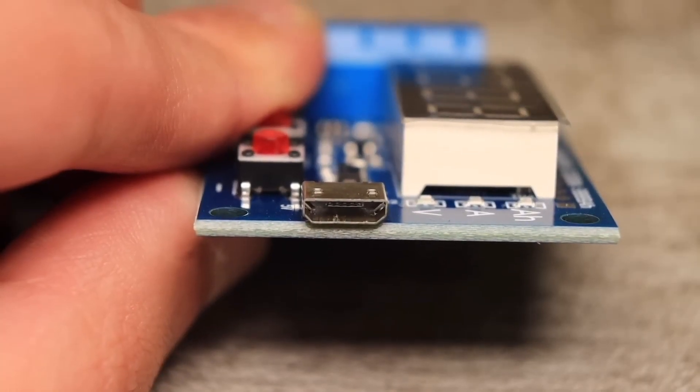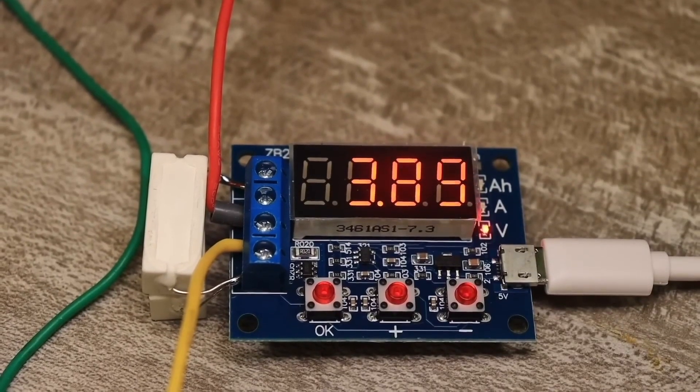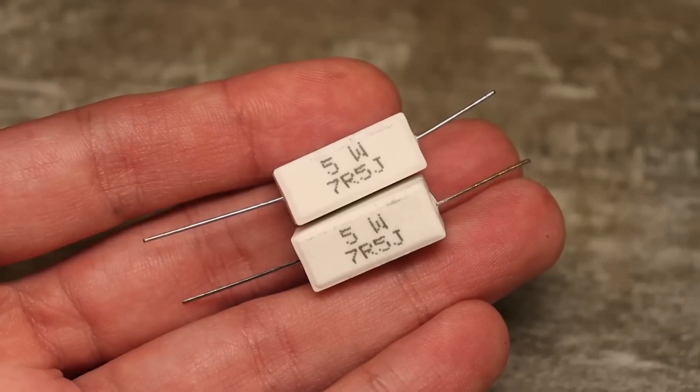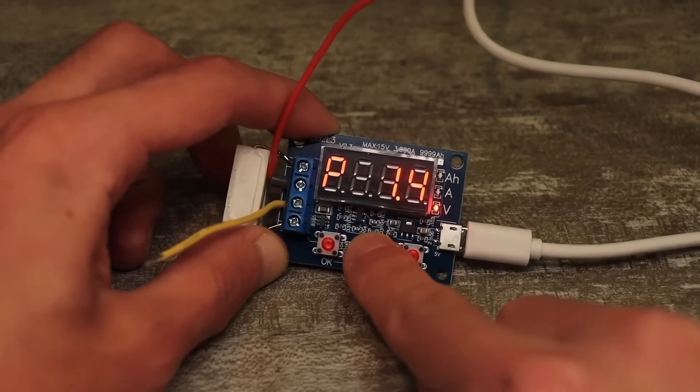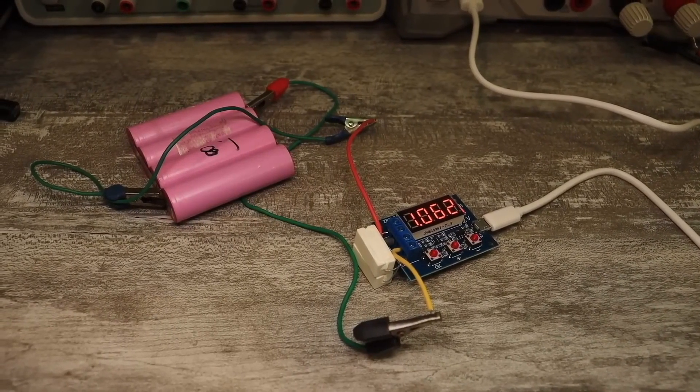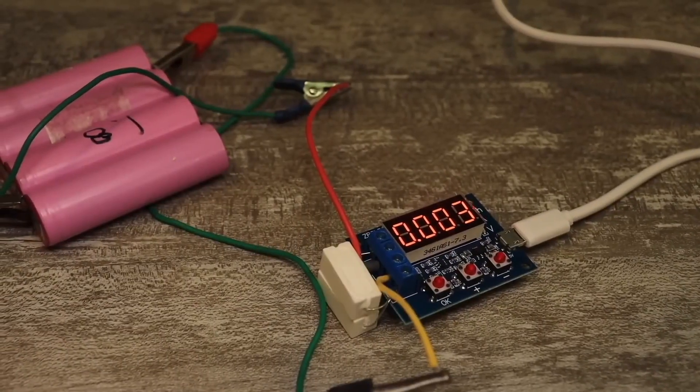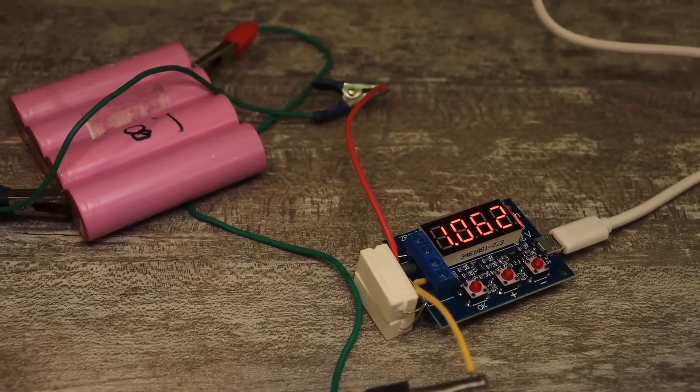The device itself is powered by 5 volts via micro USB. The maximum discharge current is up to 3 amps and depends on the resistors. The discharge cutoff voltage can be adjusted in 10 millivolt increments. Basically, you connect the battery and resistors to the device, set the discharge cutoff voltage, start it, and the battery will discharge down to the set voltage.